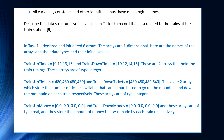They're of type integer. trains_uptickets is equal to 480, 480, 480, 480, and trains_downtickets is equal to 480, 480, 480, 640. These are two arrays which store the number of tickets available to go up and down the mountain on each train respectively, also of type integer. Finally, trains_upmoney and trains_downmoney are initialized to 0.00 for all elements and are of type real, declared to store the amount of money made by each train ride.